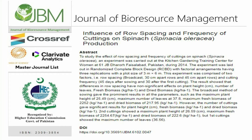The results showed that differences in row spacing have non-significant effects on plant height, number of leaves, fresh biomass, and dried biomass. The broadcast method of sowing gave the most prominent results in all parameters, such as a maximum plant height of 25.49 cm, maximum number of leaves at 37.8, maximum fresh biomass of 2,252 kg, and dried biomass of 217.95 kg.